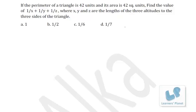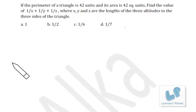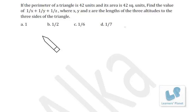Next question from geometry: if the perimeter of a triangle is 42 units and its area is 42 square units, find the value of 1/x + 1/y + 1/z, where x, y, and z are the lengths of the three altitudes to the three sides. Let the sides be a, b, and c.